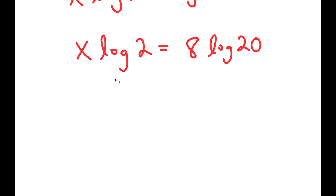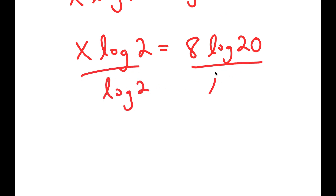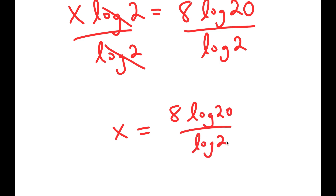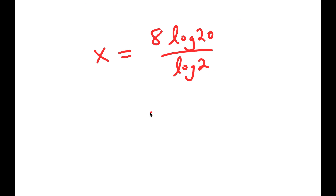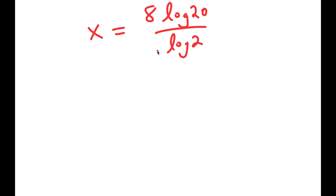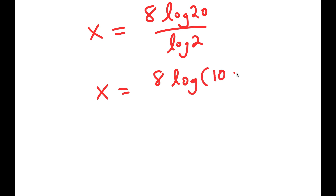Now we want to isolate x, so I'm going to divide both sides by log 2. These two cancel out, and I get x is equal to 8 times log 20 over log 2. From here, I'm going to rewrite 8 times log 20 as 8 times log of 10 times 2.